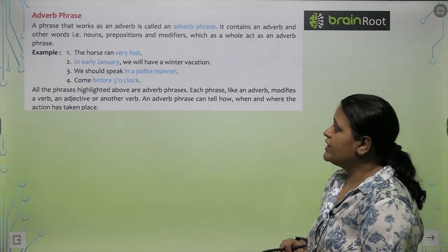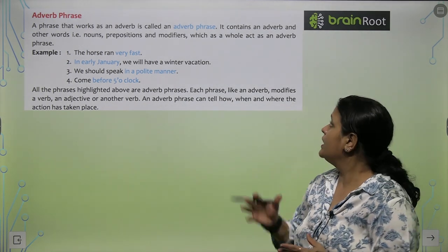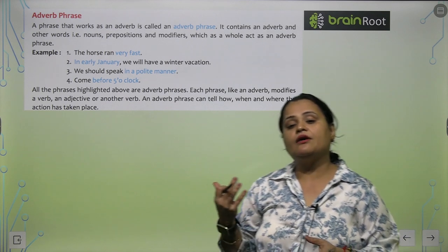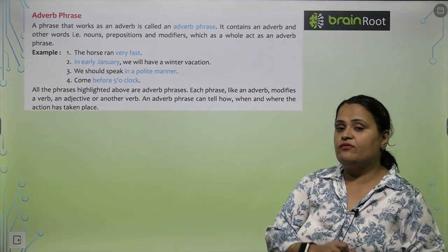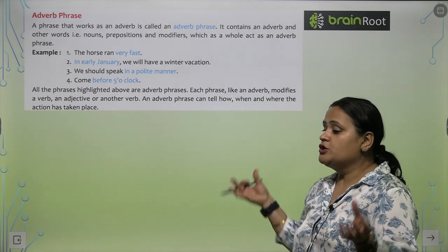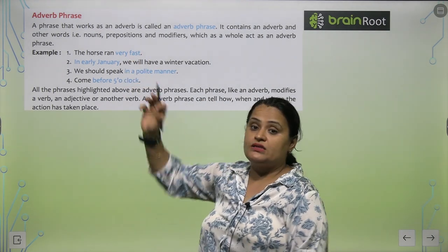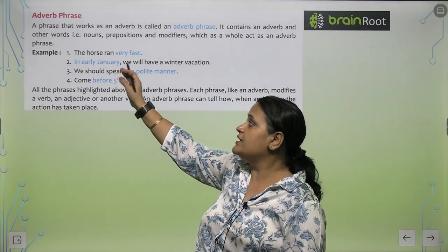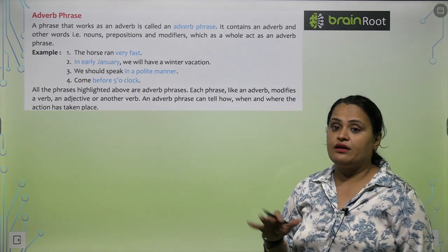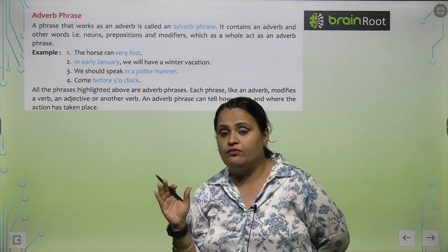Now, adverb phrase. A phrase that works as an adverb is called an adverb phrase. It contains an adverb and other words — nouns, prepositions, and modifiers — which as a whole act as an adverb phrase. Examples: 'The horse ran very fast' — how did it run? Very fast. 'In early January, we will have a winter vacation' — when? In early January. 'We should speak in a polite manner' — how? In a polite manner. 'Come before 5 o'clock' — when? Before 5 o'clock. These are all adverb phrases.